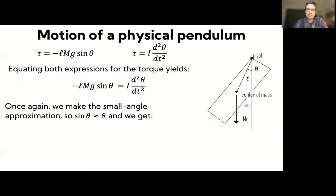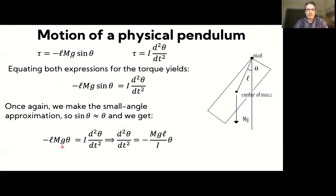We apply the small angle approximation, which limits these oscillations to small displacements from equilibrium. For small angles, sin(θ) ≈ θ. Substituting that in gives a much simpler equation: minus L·mg·θ = I·d²θ/dt², which rearranges to d²θ/dt² = −(mgL/I)·θ.